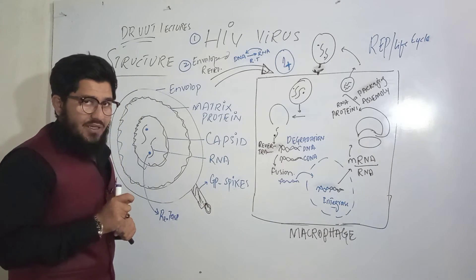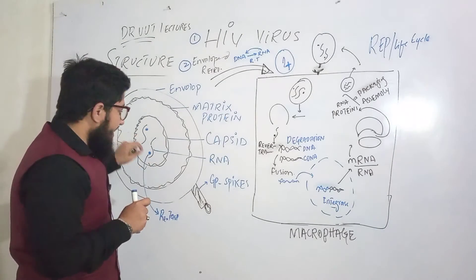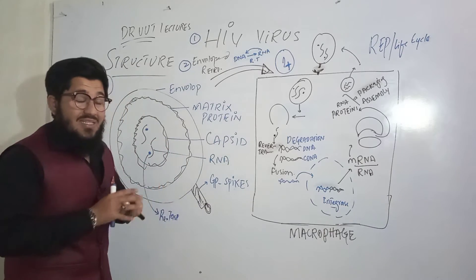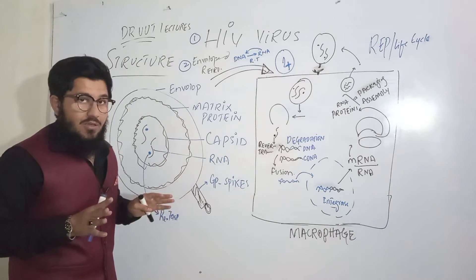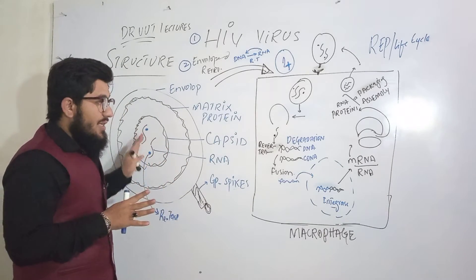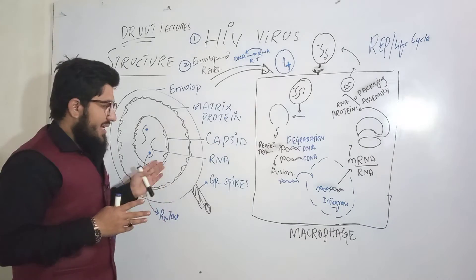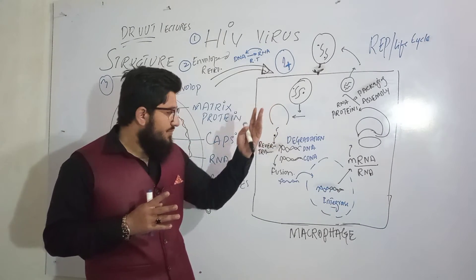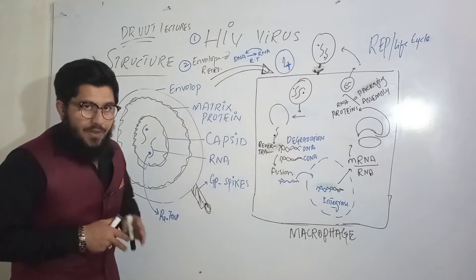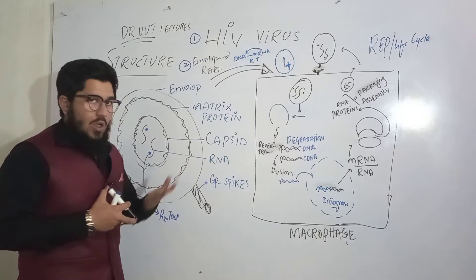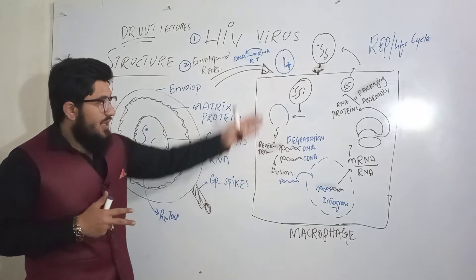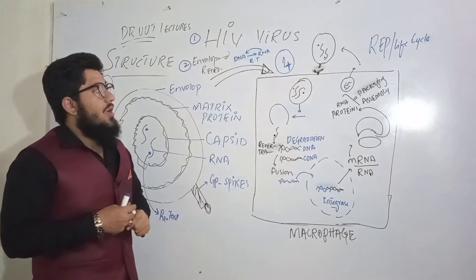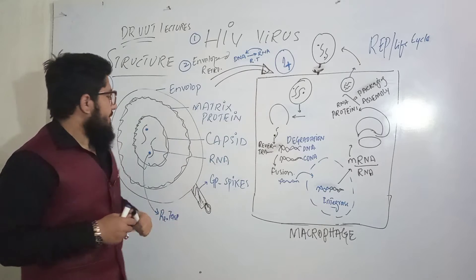There is not just one enzyme here; there are multiple enzymes available. Examples include integrase, protease, and others. We will explain all of these when we come to the fourth point — the replication or life cycle of this HIV virus.